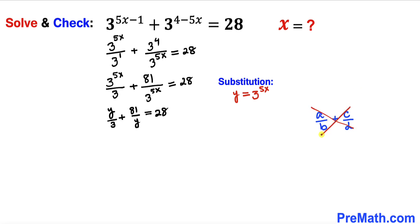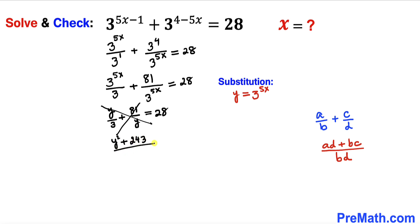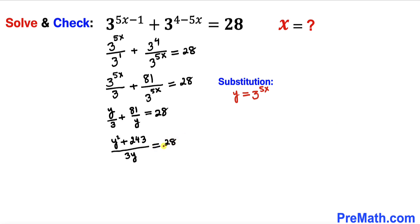Let me show you a simple trick to add these two fractions. We cross-multiply: a×d plus b×c over b×d. Applying this to the left hand side: y×y gives y², and 3×81 gives 243, all over 3y, equals 28.